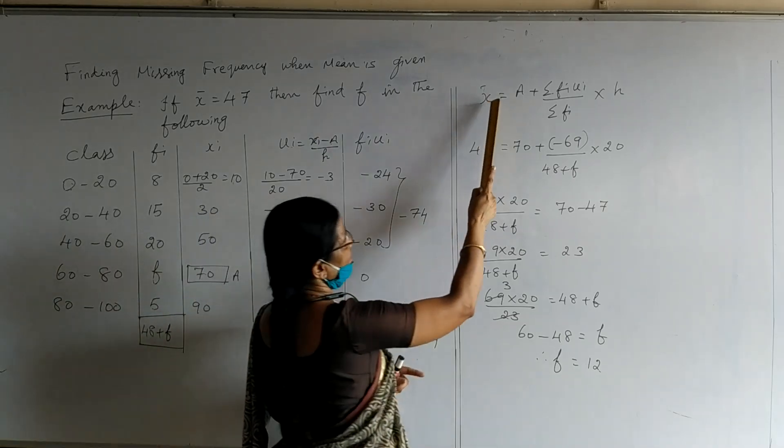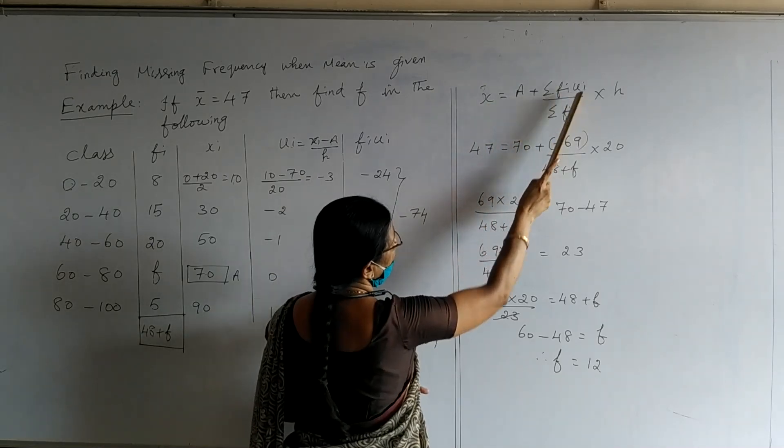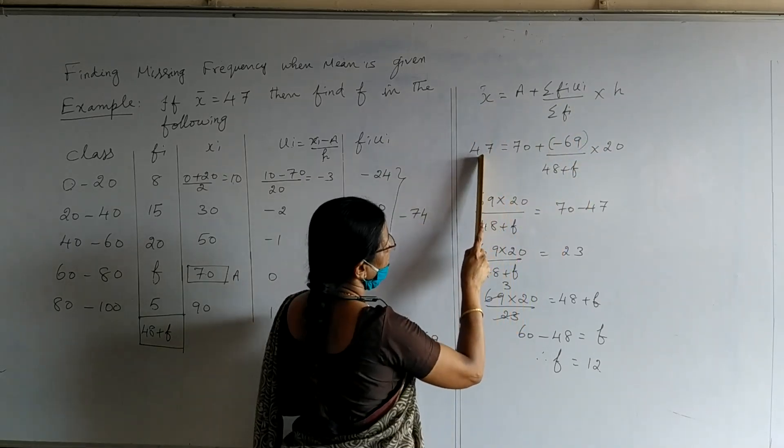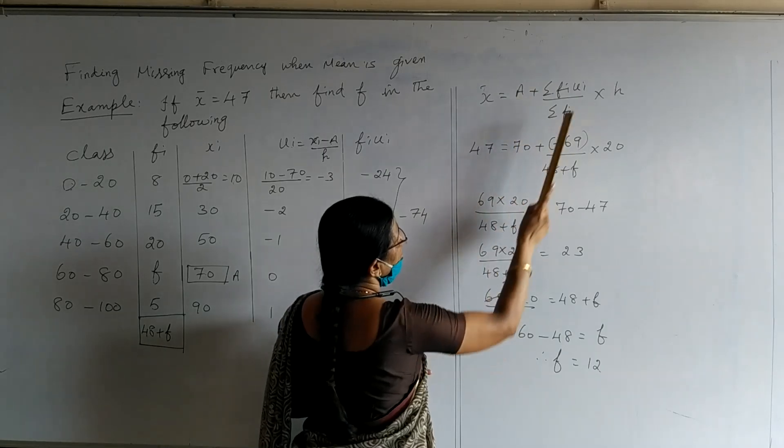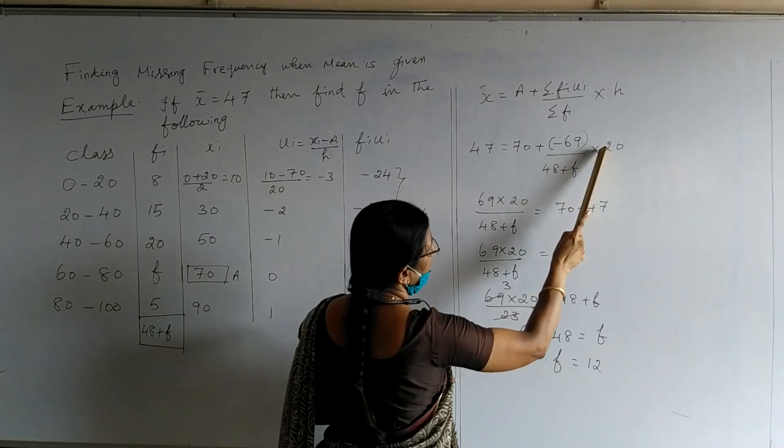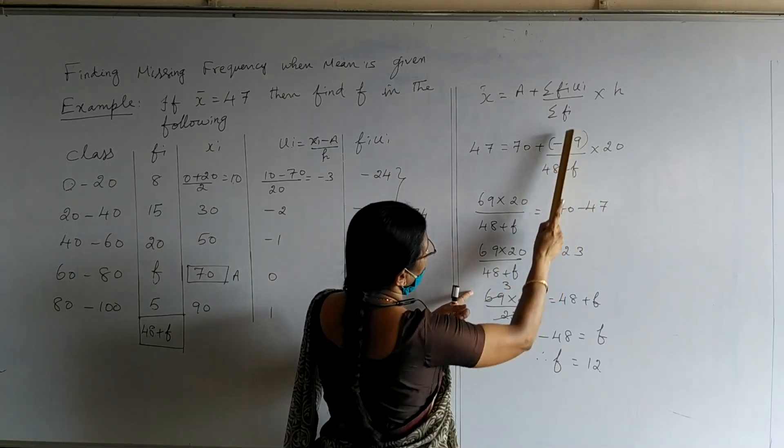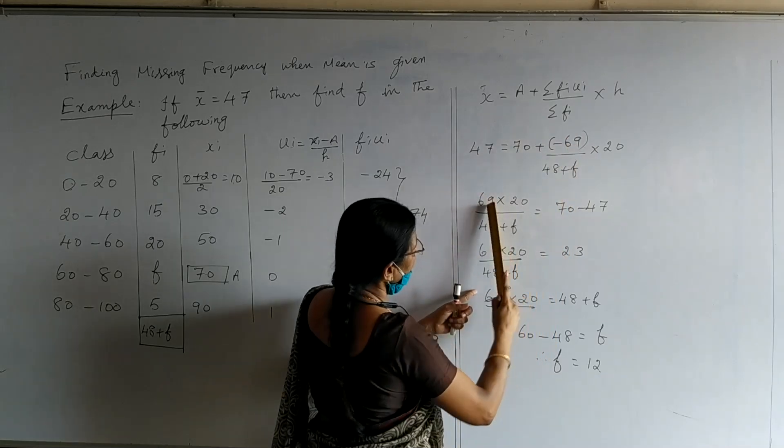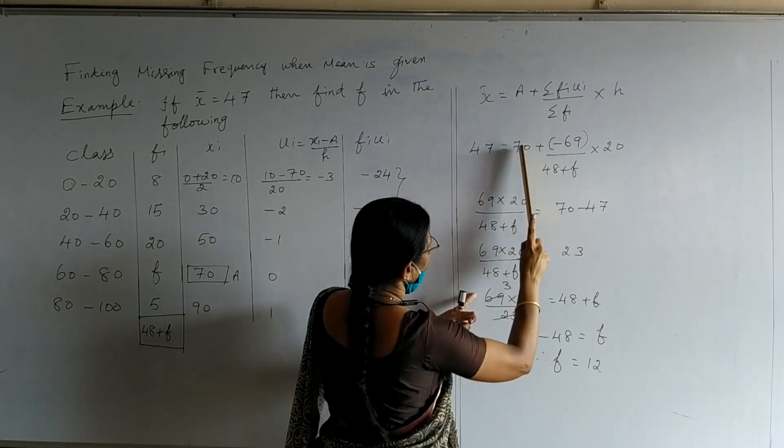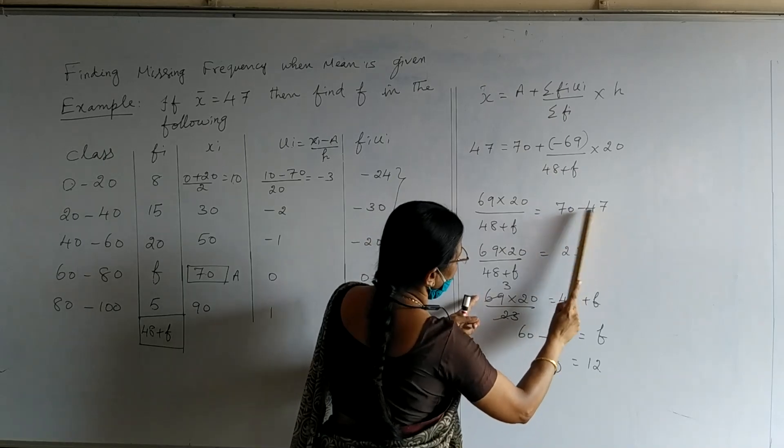Now let us use the formula for step deviation method. x̄ equals a plus sigma fi ui upon sigma fi, multiplied by h. x̄ is given in the question as 47. a we have marked as 70. Total of sigma fi ui we have found as minus 69. sigma fi is 48 plus f, multiplied by the size of the class which is 20. So here, because it is minus, I have brought this entire term to the left side, which becomes plus 69 into 20 upon 48 plus f equals 70 minus 47. This total becomes 23.